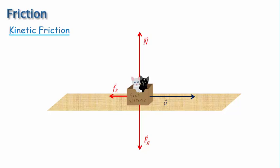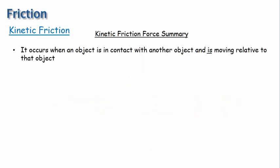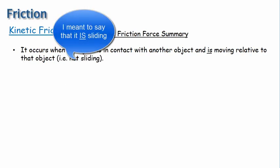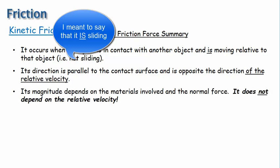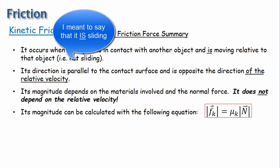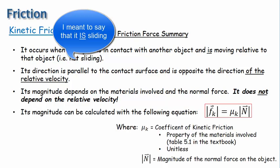Here's a summary of the behavior of kinetic friction. It occurs when an object is in contact with another object and is moving relative to that object. Like static friction, its direction is parallel to the contact surface, but this time it is opposite the direction of the relative velocity. Its magnitude depends on the materials involved and the normal force — it does not depend on the relative velocity. The magnitude of the kinetic friction force is calculated as f_k = μ_k × N, where mu sub k is the coefficient of kinetic friction — a property of the materials involved and unitless — and N is the magnitude of the normal force.